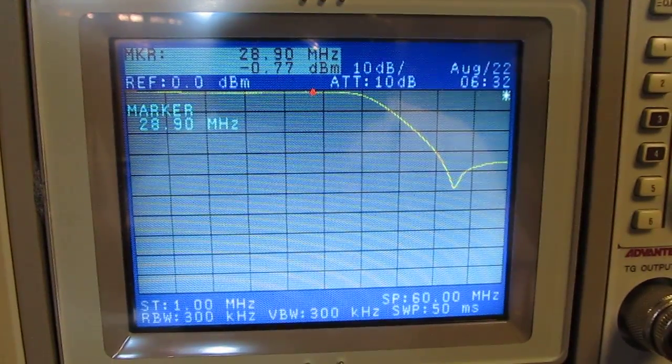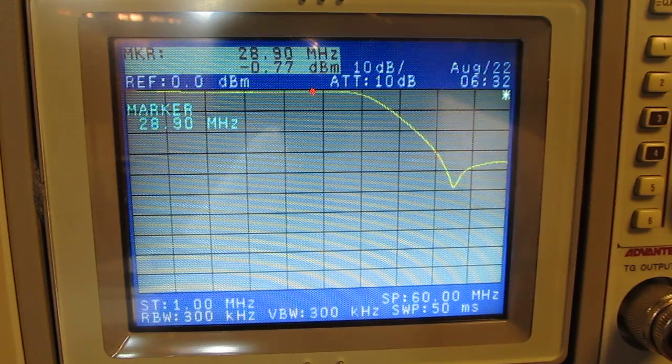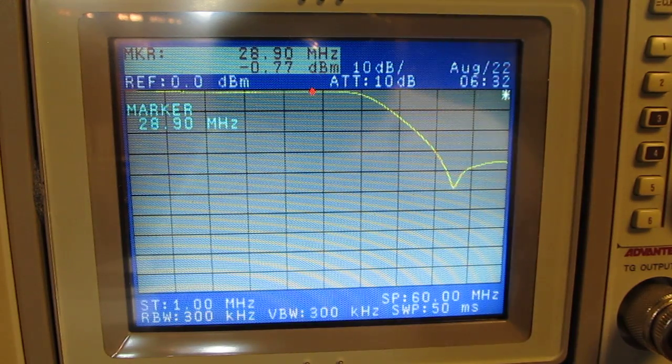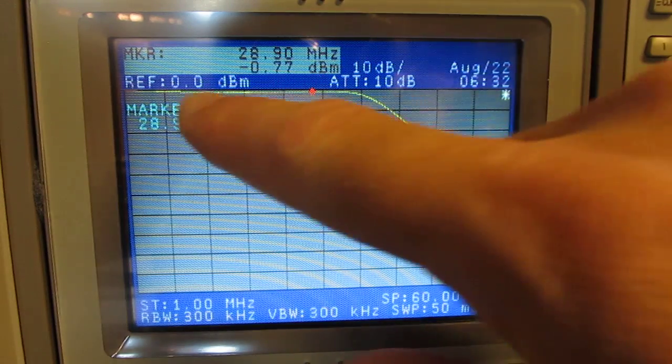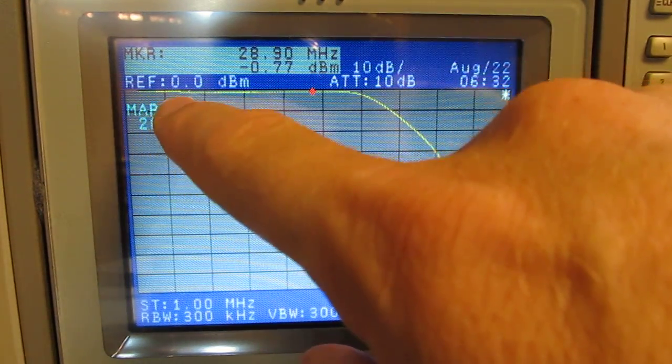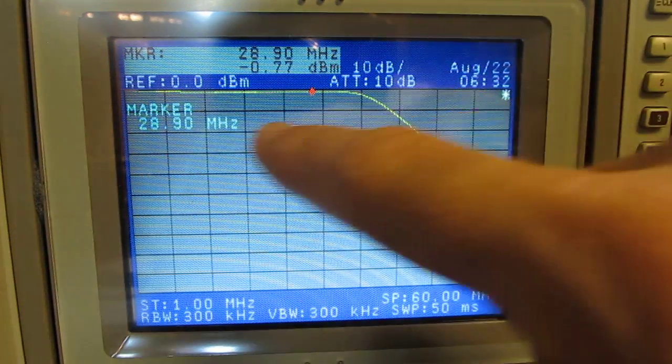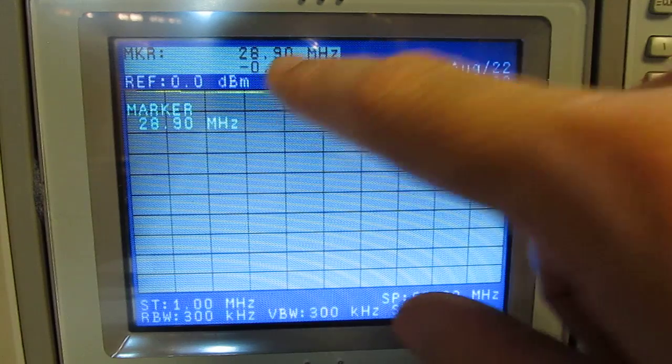Right now the switch position is in the 10 and 12 meter position which covers basically 24 megahertz and 28-29 megahertz. So this is the low-pass filter characteristic. I've got about 0 dBm going in so that's nice and convenient so that we can look at how many dB down we are kind of directly on the marker value.